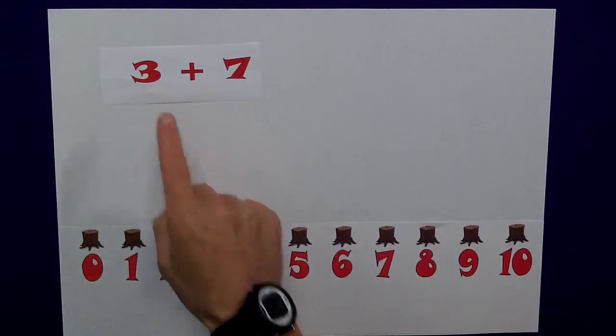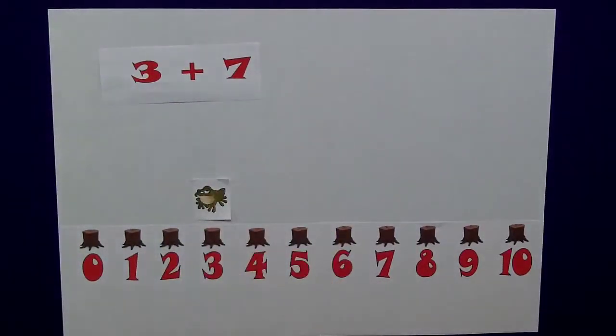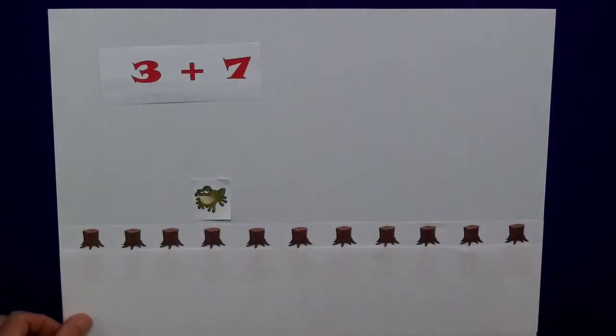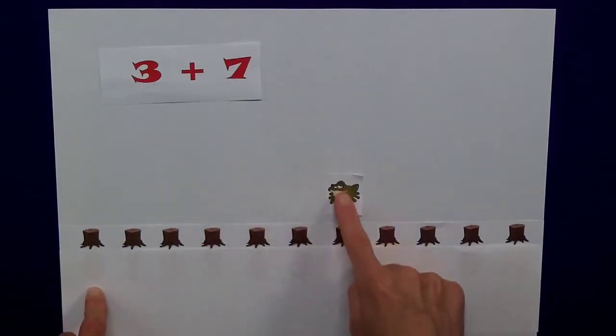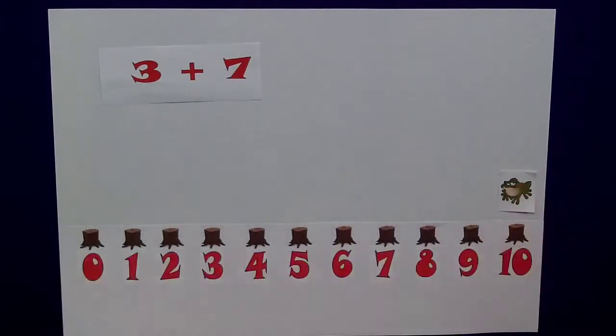A bigger jump this time, starting at 3, there we are, a jump of 7, covering up the number line, let's do our jumps, 1, 2, 3, 4, 5, 6, 7, and we finish at 10.